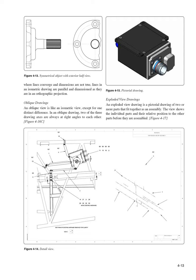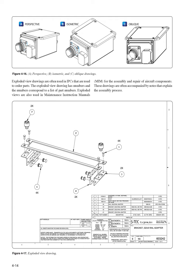An exploded view drawing is a pictorial drawing of two or more parts that fit together as an assembly. It shows individual parts and their relative position to other parts before assembly. Exploded view drawings are often used in illustrated parts catalogs (IPC) for ordering parts, with numbers corresponding to a list of part numbers for the assembly and repair of aircraft components. These drawings are often accompanied by notes that explain the assembly process.